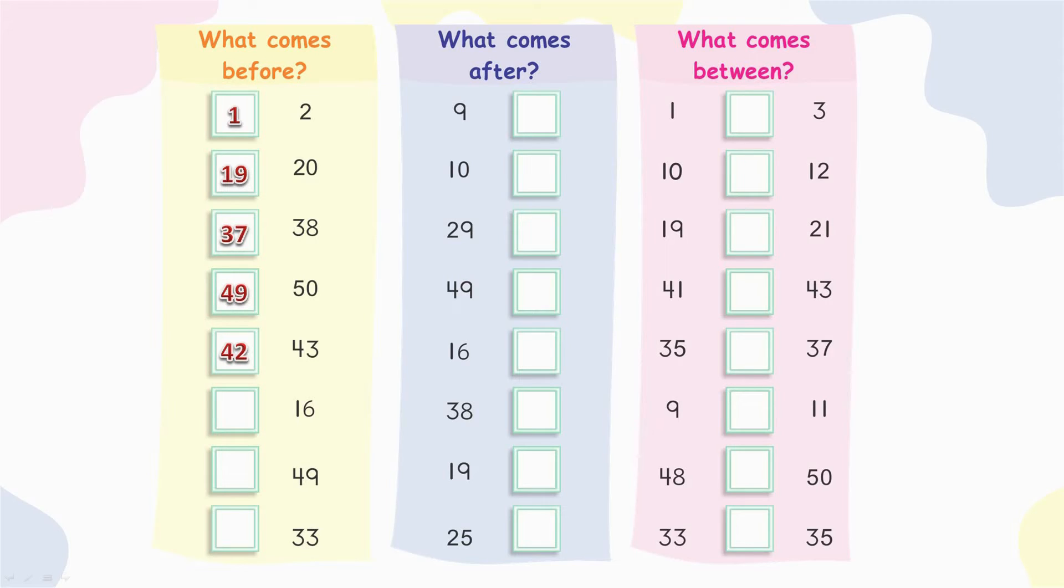Forty-three. What comes before forty-three? Forty-two. Sixteen. Fifteen.